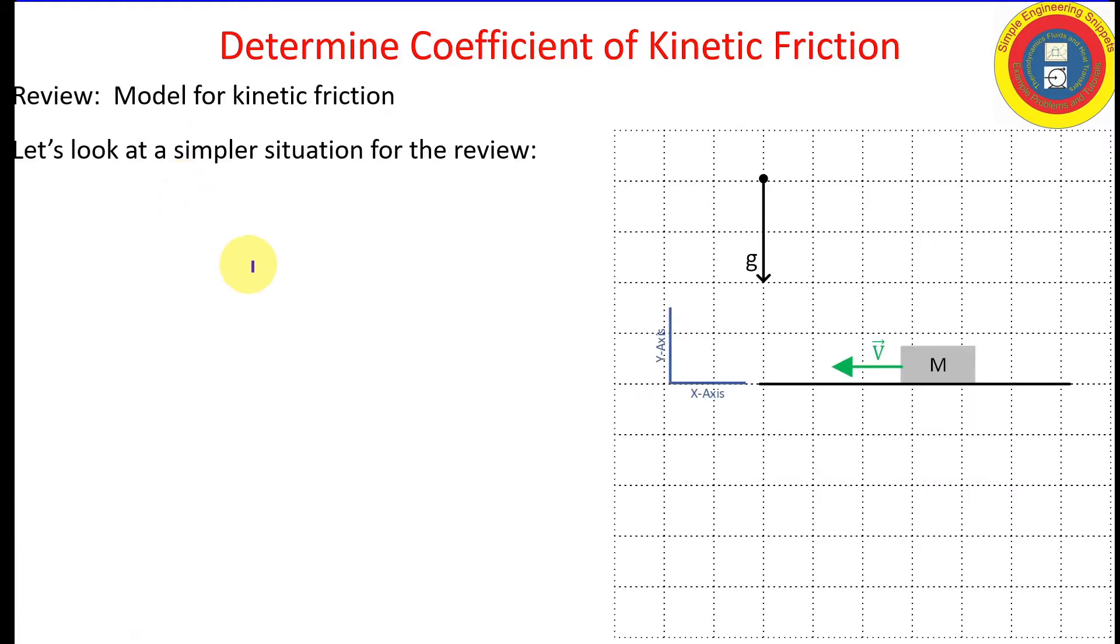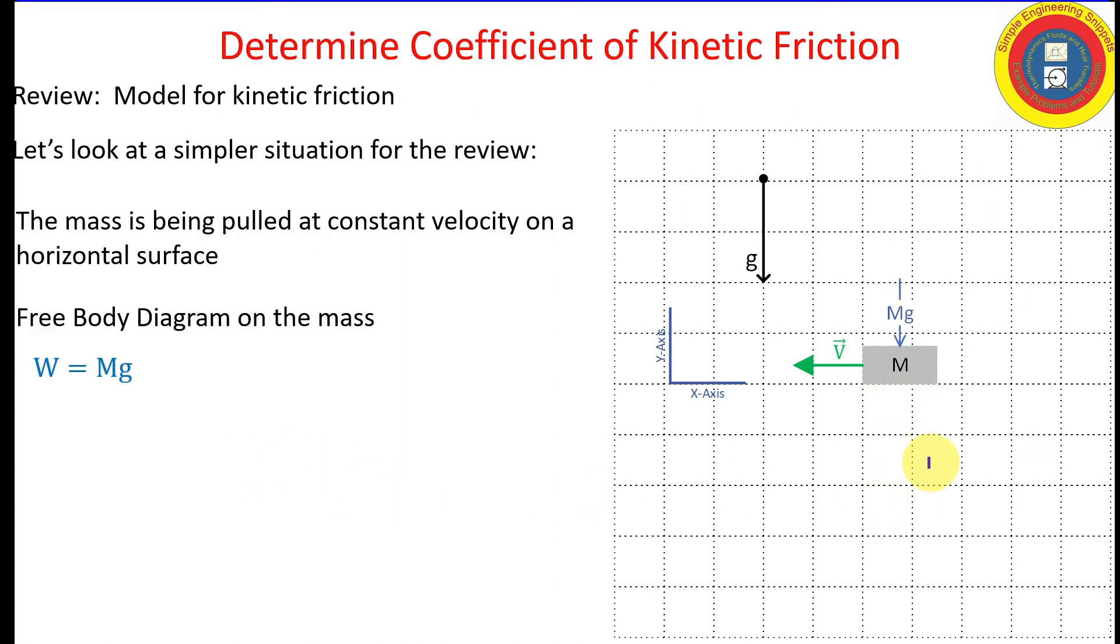Let's look at a separate situation where we have a block that is being pulled at constant velocity along a horizontal surface. If it's at a constant velocity, that means the external forces cancel out. It's not accelerating. And so we can use Newton's second law in the Y direction where we have the weight force and the normal force. This is the force that the surface is pushing back up on the block. And this is what we meant by the normal force in the model for Coulomb's Law of Friction.